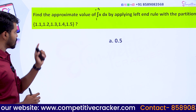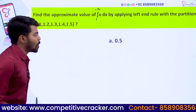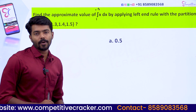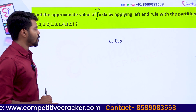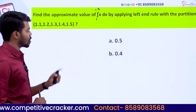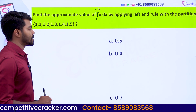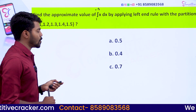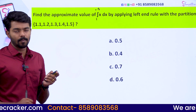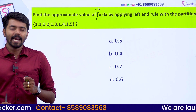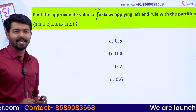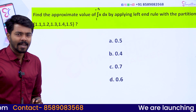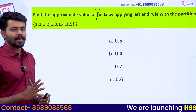I will discuss the question about integration. Option A is 0.5, Option B is 0.4, Option C is 0.7, Option D is 0.6. It is very important.